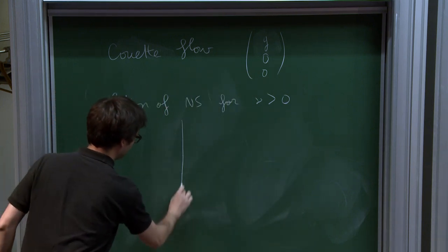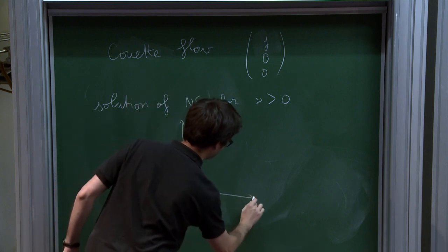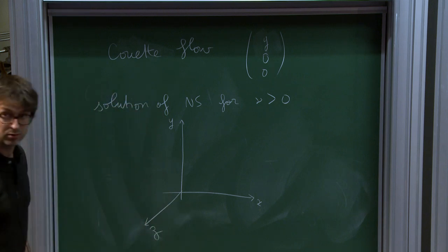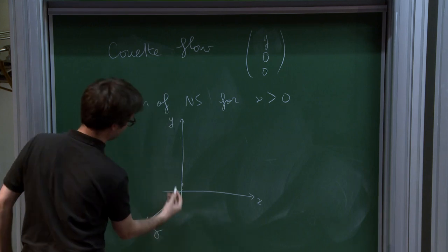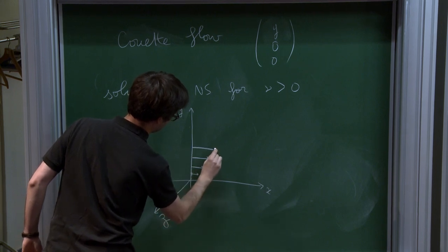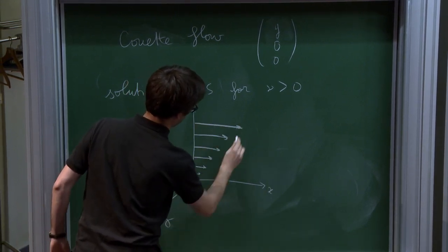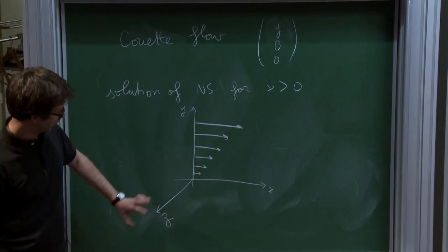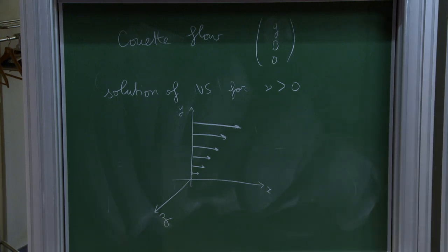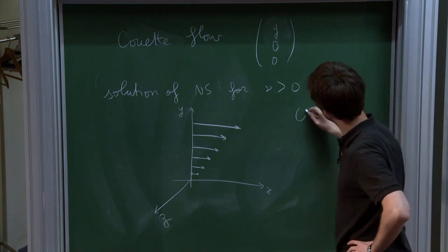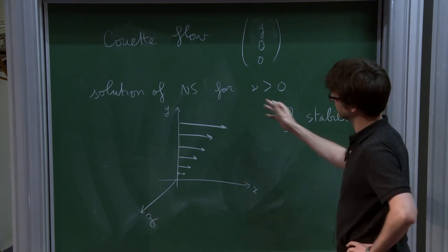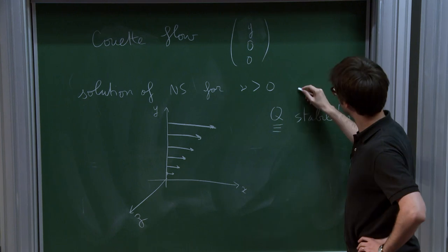So maybe I should draw a picture. So this is y, this is x, and this is z. And so the velocity of the fluid at the point on the y-axis goes like that. So you see there is a linear shear. So I hope you get a sense for the geometry that we are looking at. So the question that we want to understand is the stability of this flow, which is a stationary solution of Navier-Stokes. And maybe even the asymptotic stability.